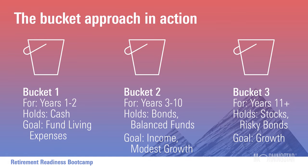Here's a quick visual depicting the bucket approach in action. In my bucket portfolios I've employed three buckets. Bucket one covers near-term living expenses — one to two years' worth — and we're not taking any risk here. This is primarily or entirely cash: CDs, money market mutual funds, or money market accounts. Right now online savings banks are some of the best sources of guaranteed yield. You don't want to venture out on the risk spectrum with bucket one.